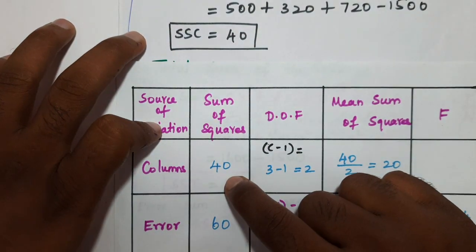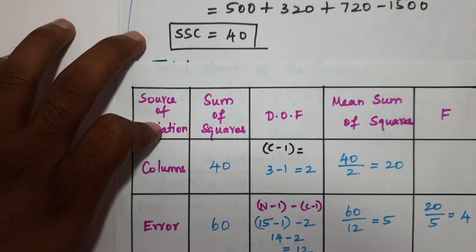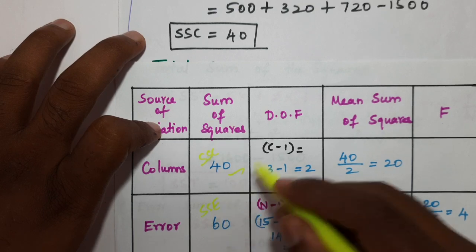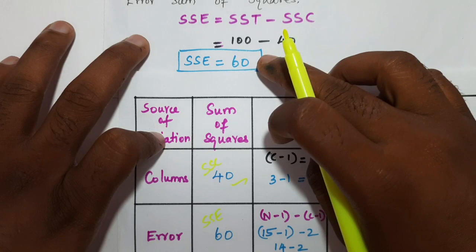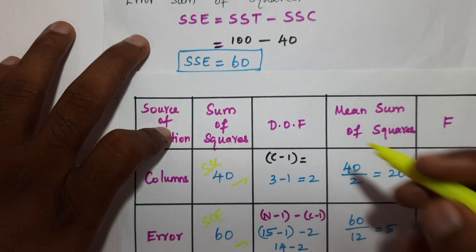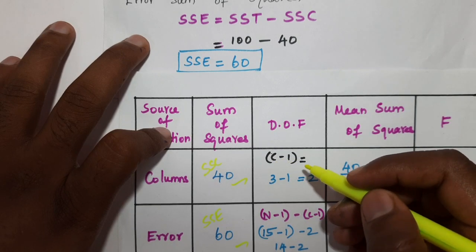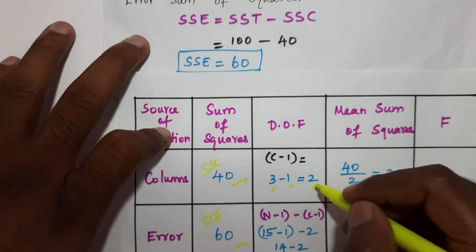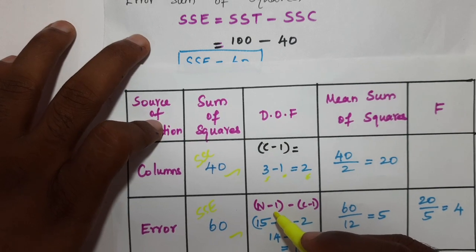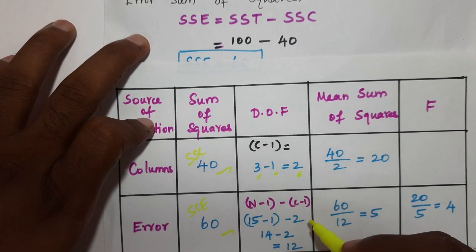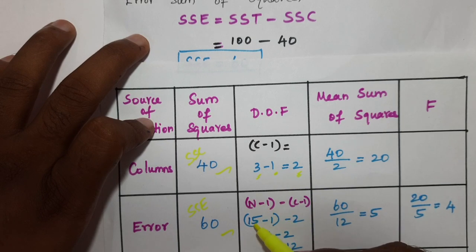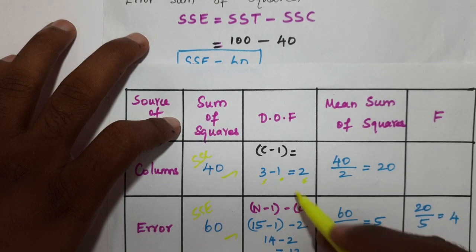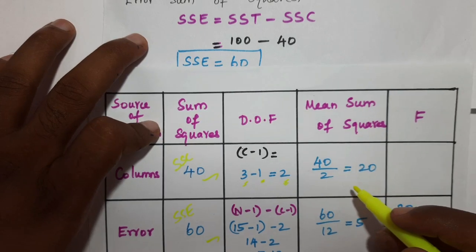Filling in the ANOVA table with SSC and SSE values. Degrees of freedom for columns: c minus 1. We have 3 columns, so c minus 1 = 2. Degrees of freedom for error: N minus 1 minus (c minus 1). Total N = 15, so N minus 1 = 14; 14 minus 2 = 12.